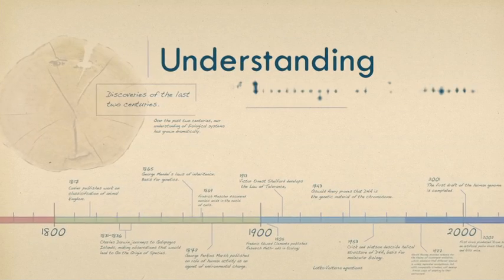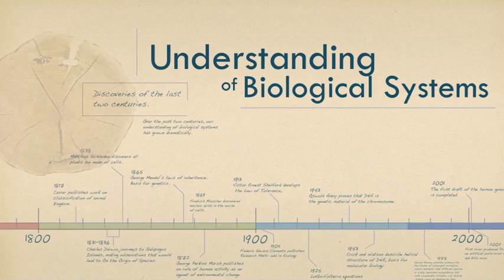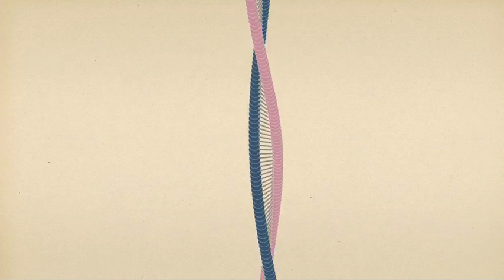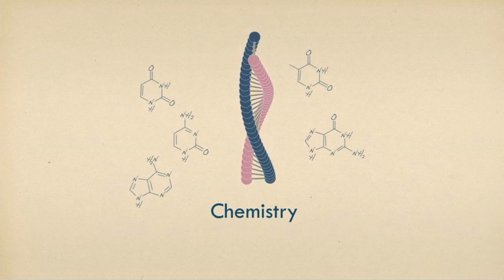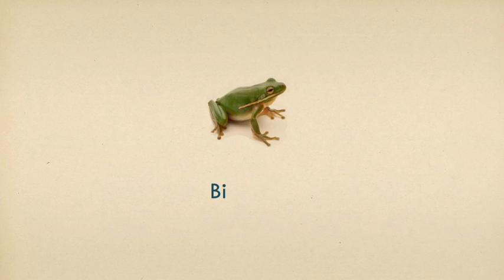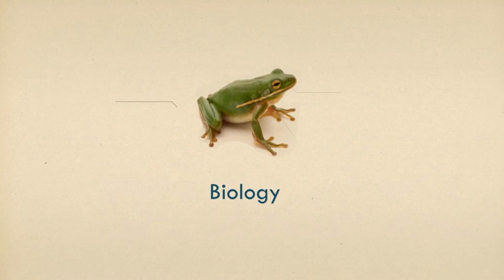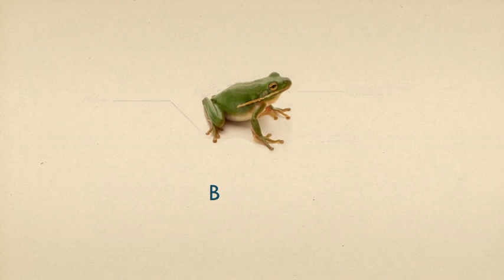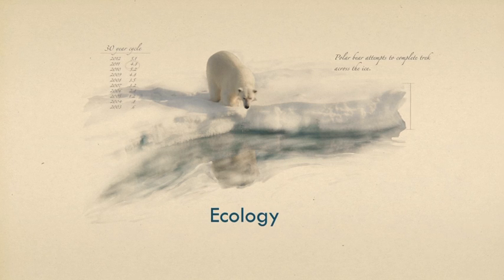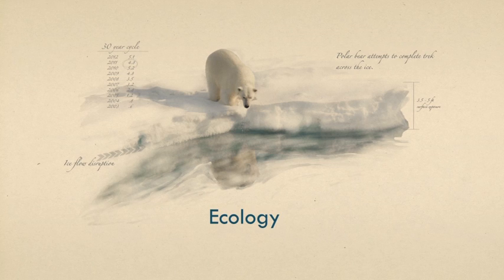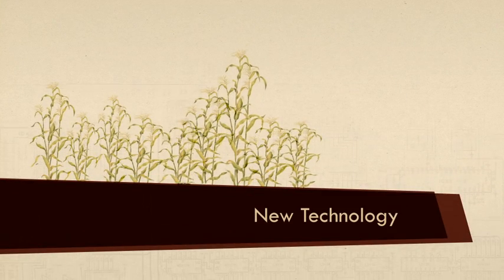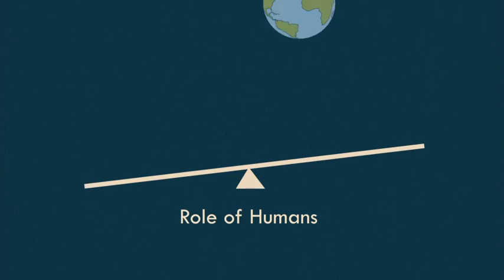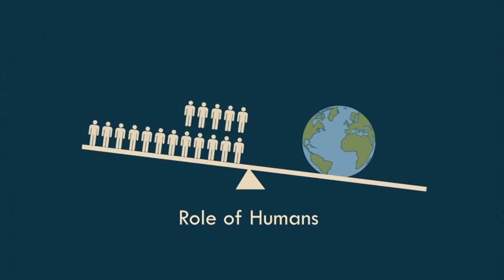Over the past two centuries, our understanding of biological systems has grown dramatically. Chemistry helped us understand more about the atoms, molecules, and nutrients important to life. Biology helped us understand how an organism's form and function related to its survival. And ecology led us to an understanding of the interactions and interdependencies between the living and non-living components of an environment. While these scientific advances led to new understanding and technological innovation, the role of humans in biological systems was often ignored.